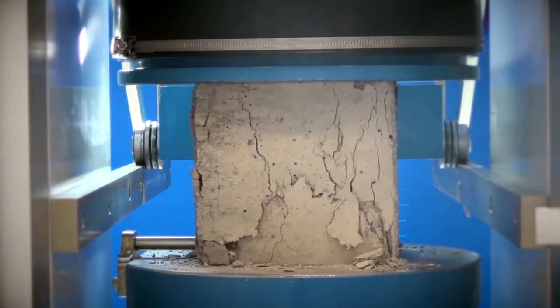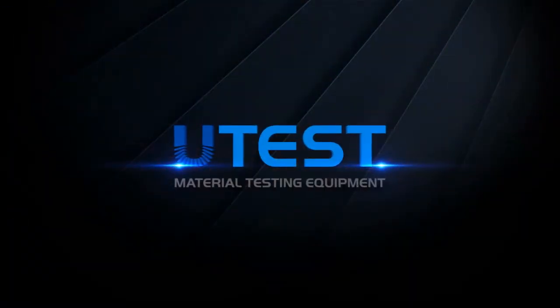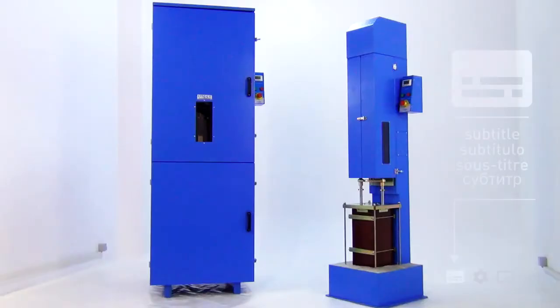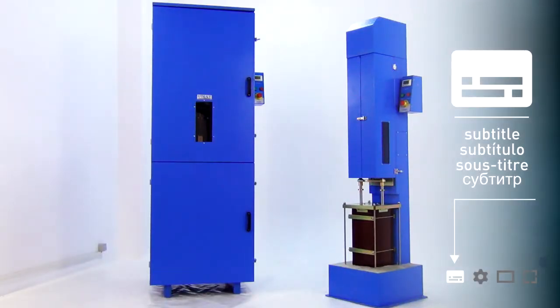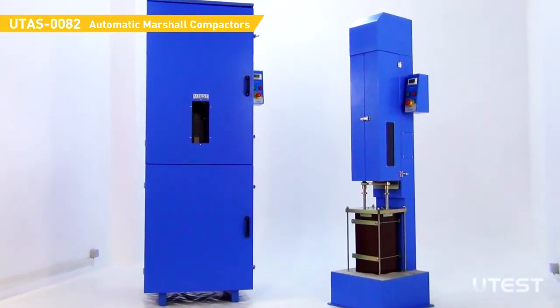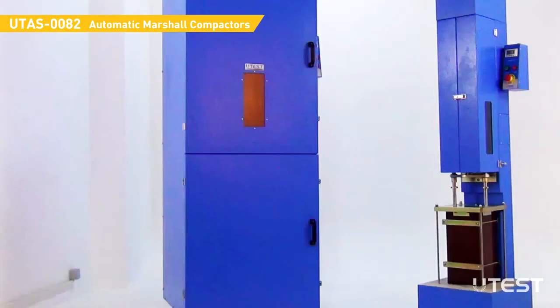UTEST is a leading global player in the construction materials test equipment sector, providing equipment and services in all areas. UTEST automatic Marshall compactors are used to compact Marshall specimens according to both EN and ASTM standards.